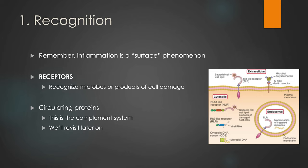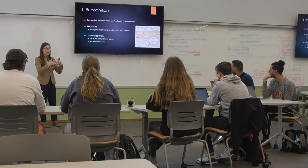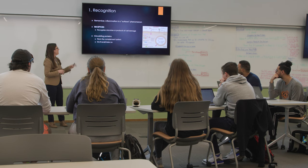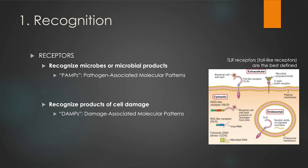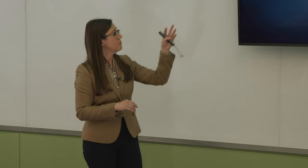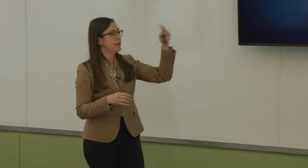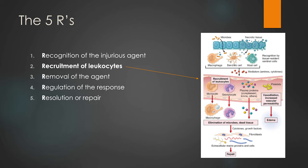Inflammation is a surface phenomenon — we're talking about cell-cell interaction, cell-bacteria interaction, and cell-blood vessel interaction. When thinking about surface interactions, we're thinking about receptors. I need to be able to recognize injurious agents through receptors. There are two broad categories: PAMPs, or pathogen-associated molecular patterns, which recognize actual bacteria or viruses, and DAMPs, or damage-associated molecular patterns, which recognize signals from damaged cells saying 'I need help.' PAMPs and DAMPs are the two broad ways we recognize that something is wrong.